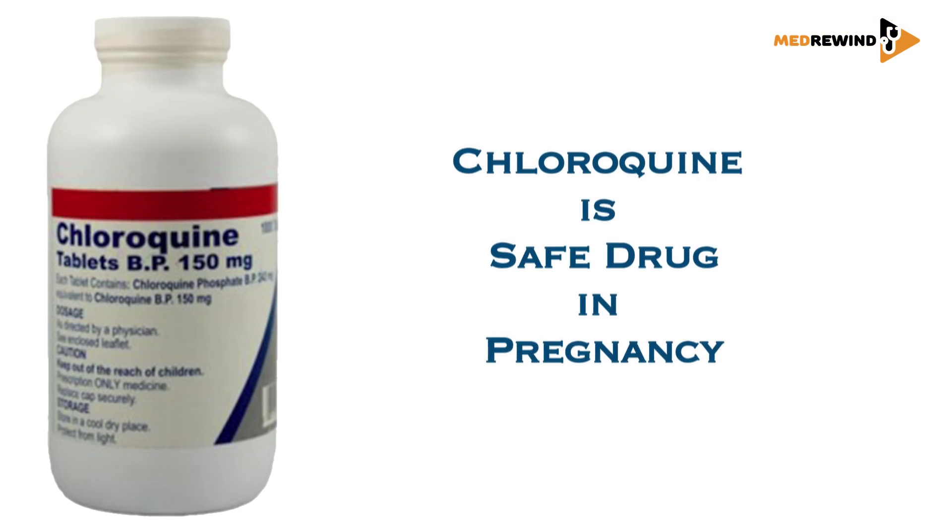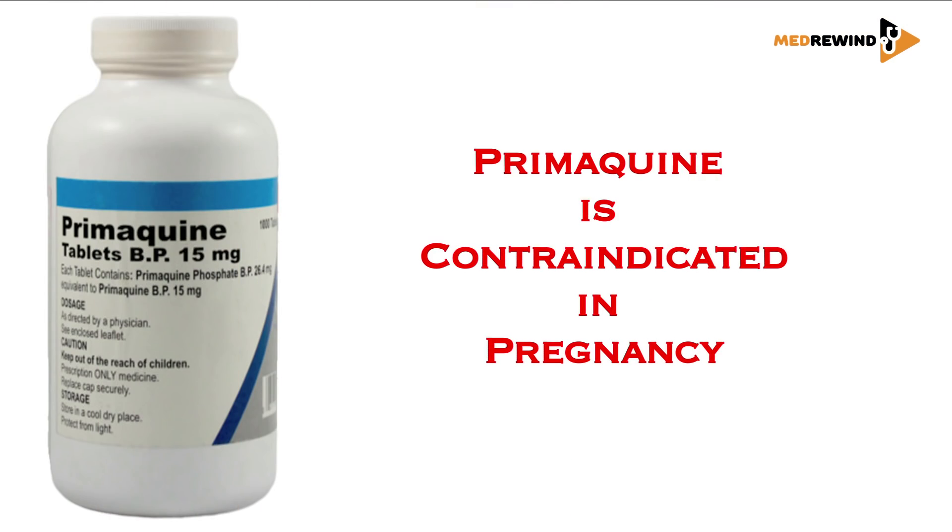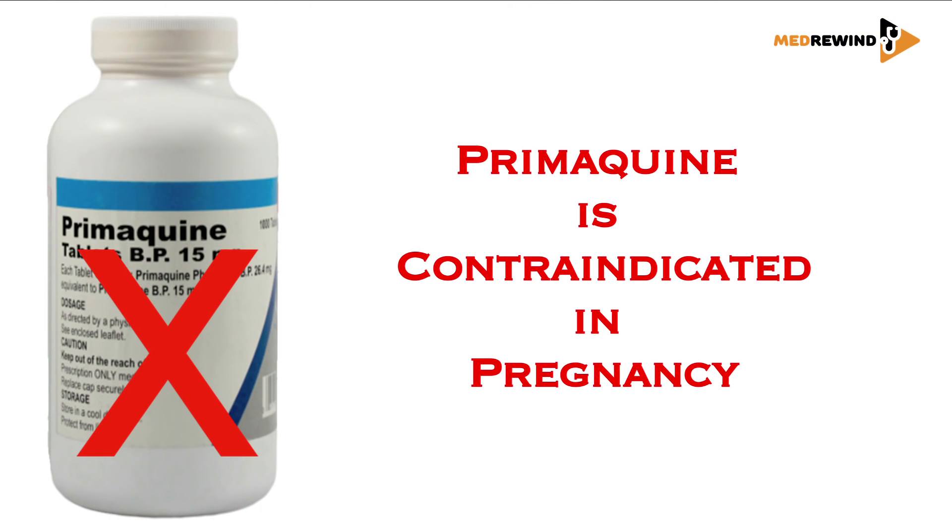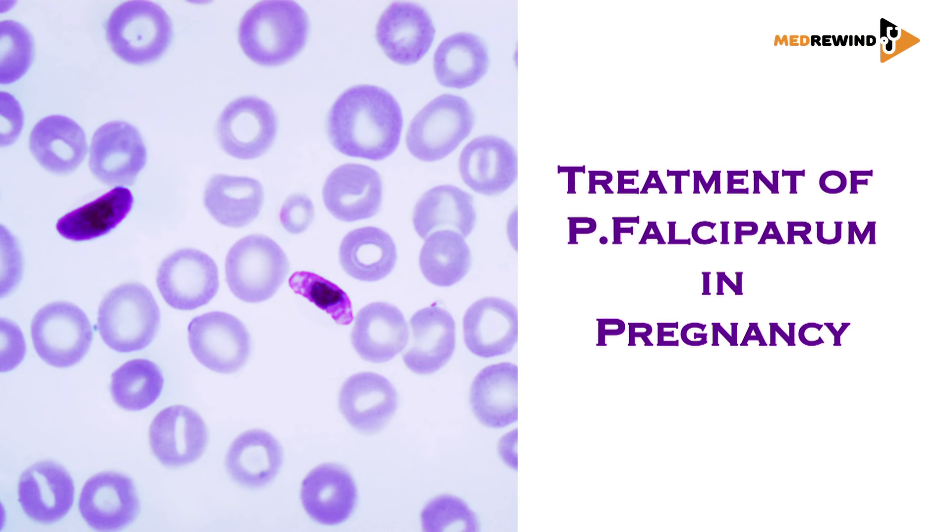For treatment in pregnancy: if a pregnant woman has vivax malaria, chloroquine is very safe and can be given in any trimester. Primaquine is contraindicated for radical treatment in pregnancy. For falciparum malaria in the second or third trimester, artesunate can be given, and sulfadoxine-pyrimethamine can also be given, but primaquine cannot.